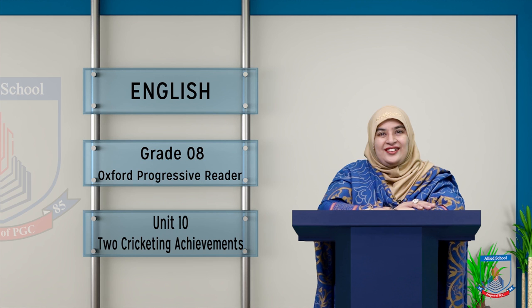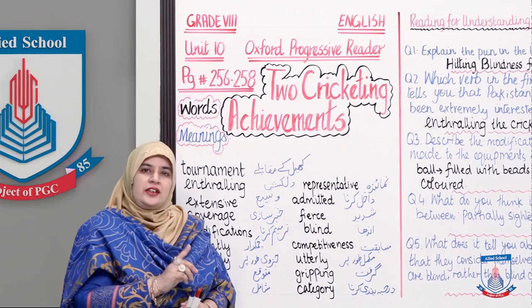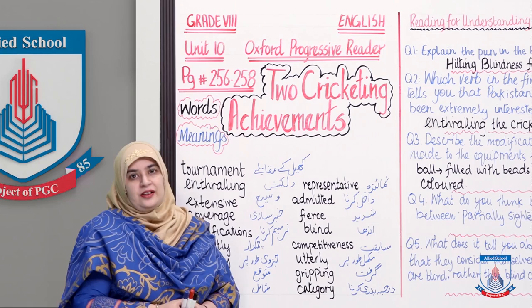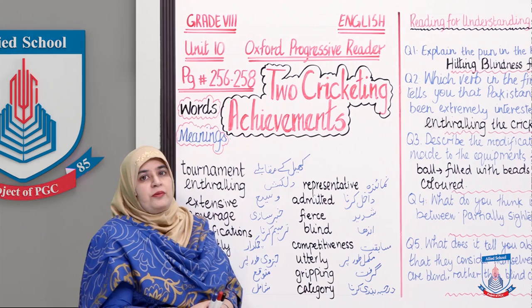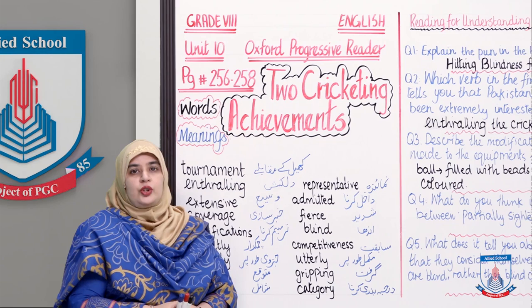Today I've brought a very interesting topic for you — this topic is about cricket. How many of you are cricket fans? That's lovely. So without further discussion, let's start. What is written on the board: take your Oxford Progressive Reader out, specifically Unit Number 10, pages 256 to 258, which carries two comprehensions.